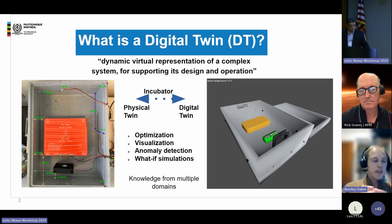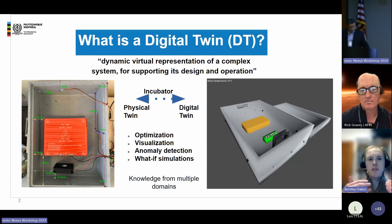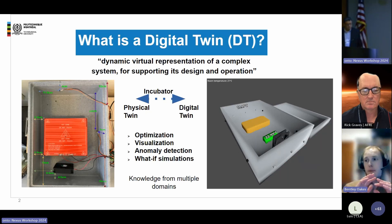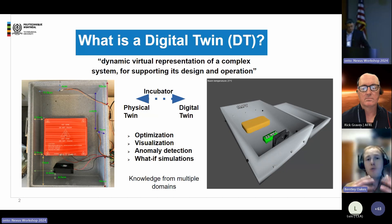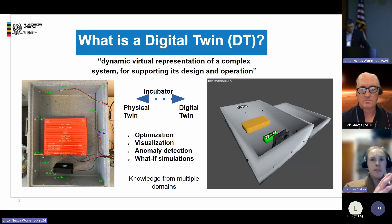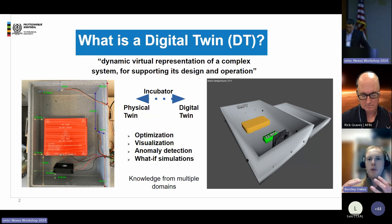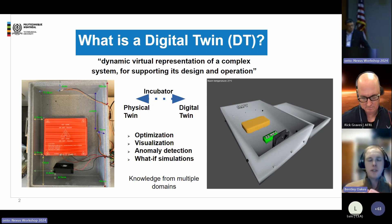I'm very interested in how to connect ontologies and digital twins. The big question is: there are dozens of definitions for what is a digital twin. To make it simple, I would say it's a dynamic virtual representation of a complex system. You have some system and you're doing a virtual representation of it, and you want to support design services and operation services.